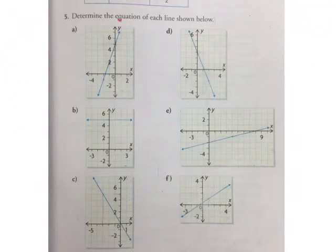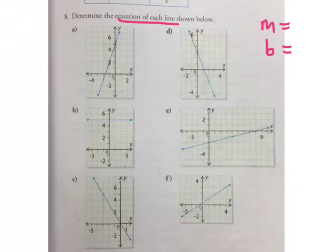They're asking you to find the equation of each line shown below. So this time you're finding the equation when you're given a graph. To write an equation of a line, what are the two things that you need to find? M, the slope, and B, because we need to plug in M and B for y = mx + b. So let's look at A.